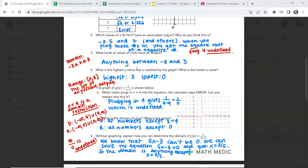What is the highest y value that is reached by the graph? 3. What is the lowest y value? 0. So that tells us that our range is from 0 to 3, including 0 to 3.